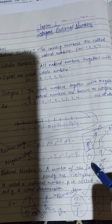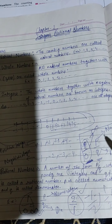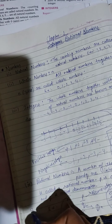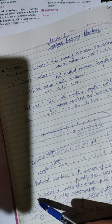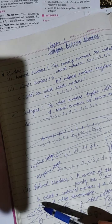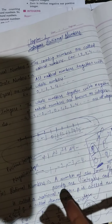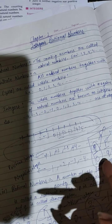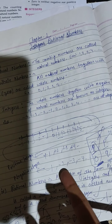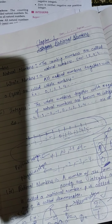इसको अच्छे से याद कर लेना क्योंकि fill in the blanks में ऐसे questions आते हैं — अगर 0 से divide करना है तो answer infinite आएगा। कोई भी number लो — जैसे 32, 55, 67 divided by 0 — answer हमेशा infinite आएगा। इसीलिए Rational Number की definition में लिखा है कि q की value 0 नहीं हो सकती। और p और q Integers होंगे — मतलब positive numbers भी हो सकते हैं, negative भी। Example: minus 1/2, minus 3/2, 5/2, 6/2 — कुछ भी आ सकता है।